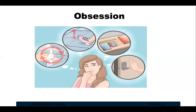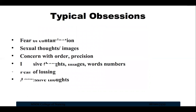Most people with OCD try to ease the distress of obsessions either by compulsion, ignoring it, suppressing the obsession, or distracting themselves with other activities. Typical obsessions include: fear of contamination by people or the environment; unwanted forbidden thoughts involving sex, religion or harm; extreme concerns with order, symmetry or precision; recurrent intrusive thoughts of sounds, images, words or numbers; fear of losing or discarding something important; and aggressive thoughts towards others or self.